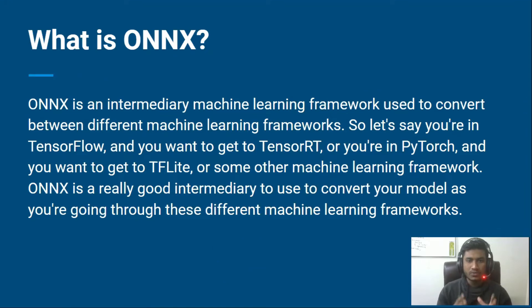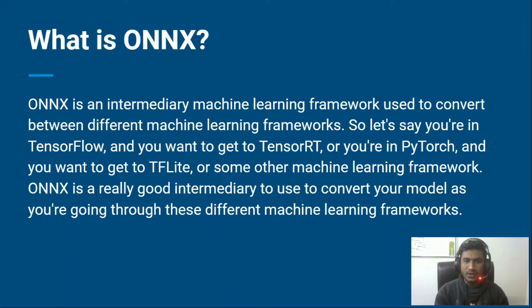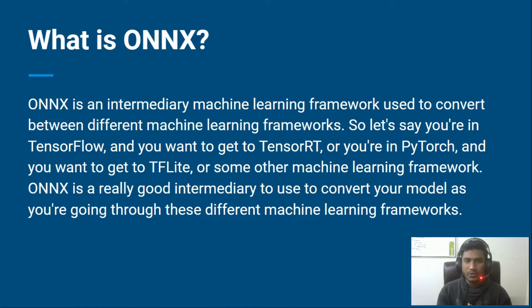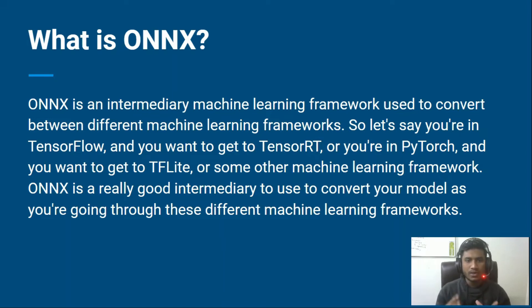So let's say you are in TensorFlow and you want to get into TensorRT, or let's say you are in PyTorch and you want to convert to TorchScript or some other machine learning framework. ONNX is a really good intermediary to use to convert your model as you move through these different machine learning frameworks.